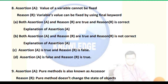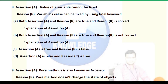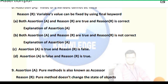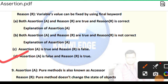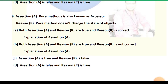Question 8 — Assertion: The value of a variable cannot be fixed. Reason: A variable's value can be fixed by using the final keyword. The assertion is false because a variable's value can indeed be fixed. The reason is true. So the correct answer is option D: assertion is false and reason is true.